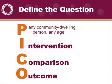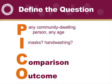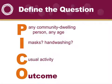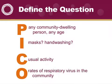So in our example about H1N1, we're concerned about really anyone living in the community of any age. H1N1 was impacting everyone, so there are no particular restrictions about age or type of person. The intervention we might be interested in would be things like masks or more frequent hand washing. The comparison would be whatever our usual activity was when H1N1 was not circulating in the community. And the outcome, of course, would be rates of respiratory viruses in the community.